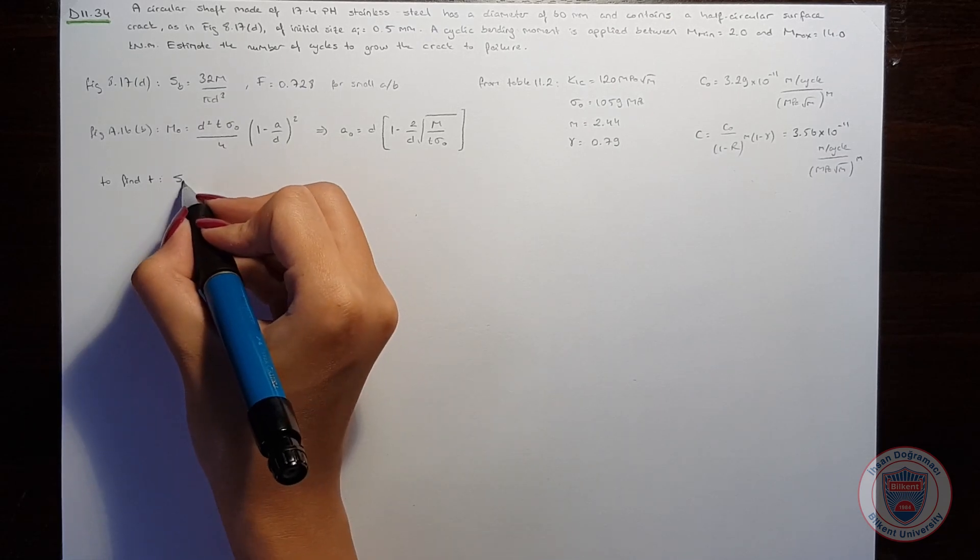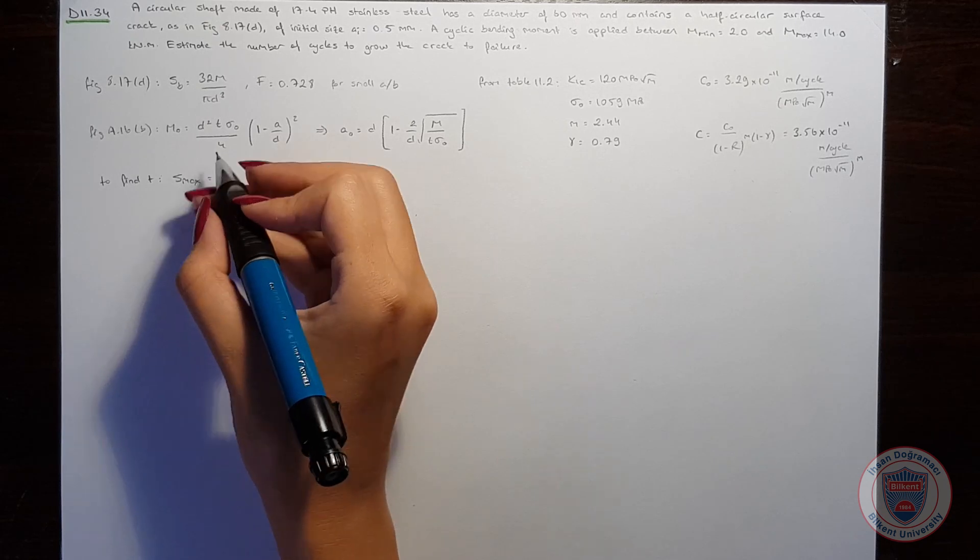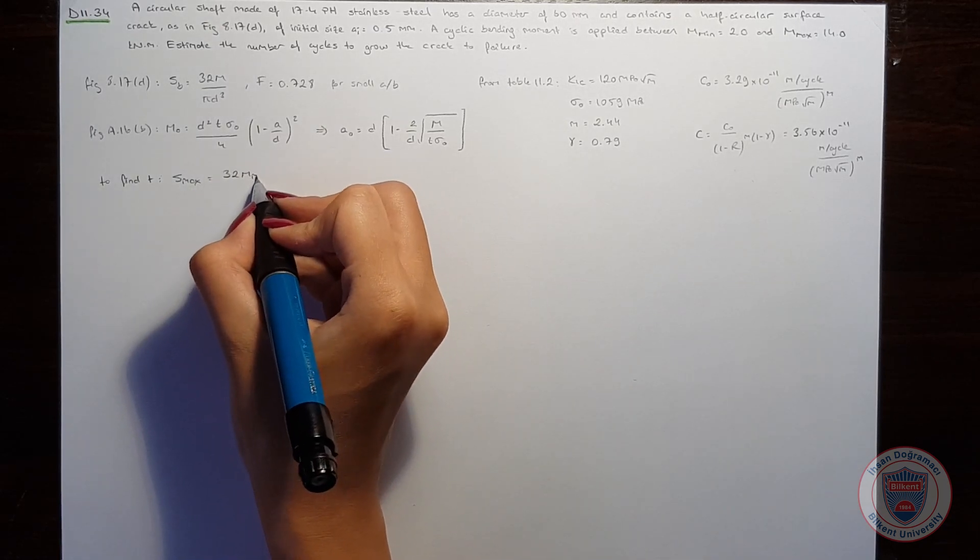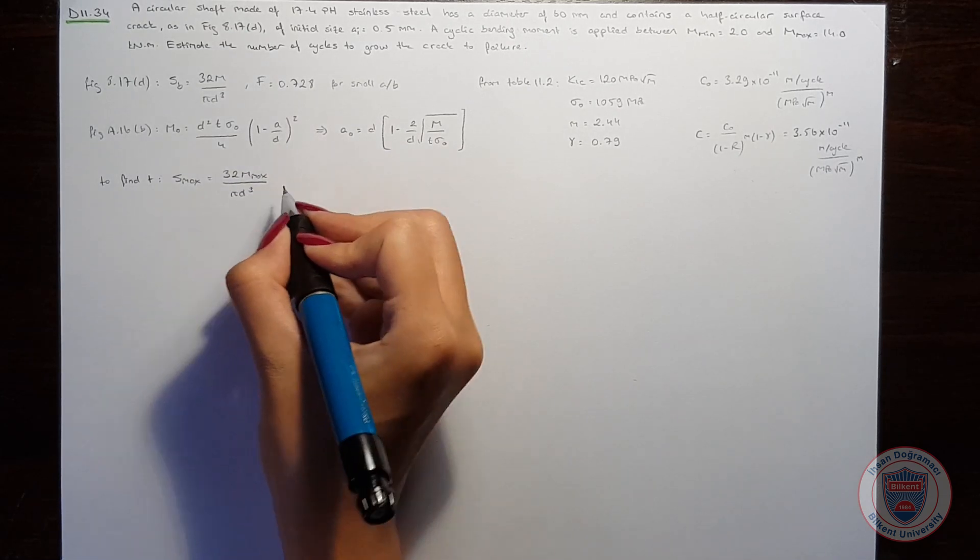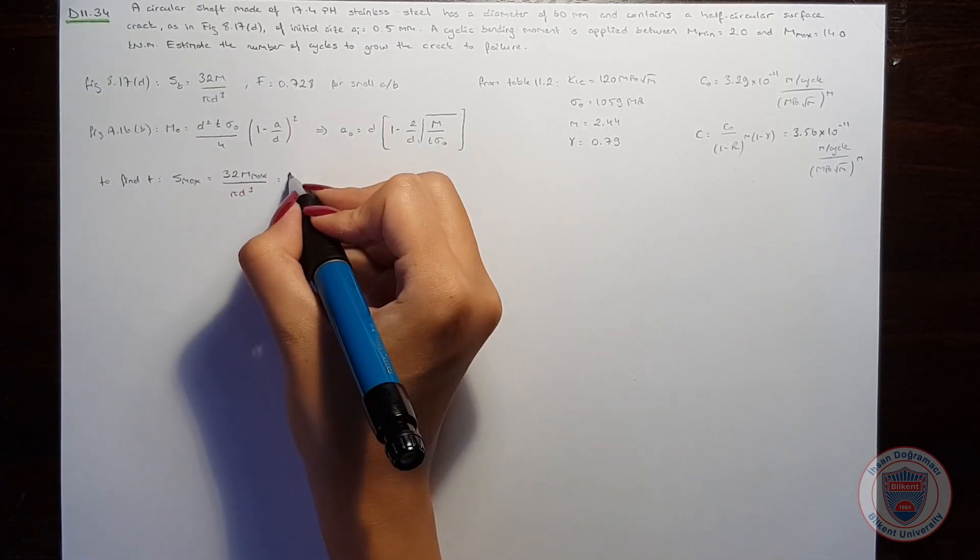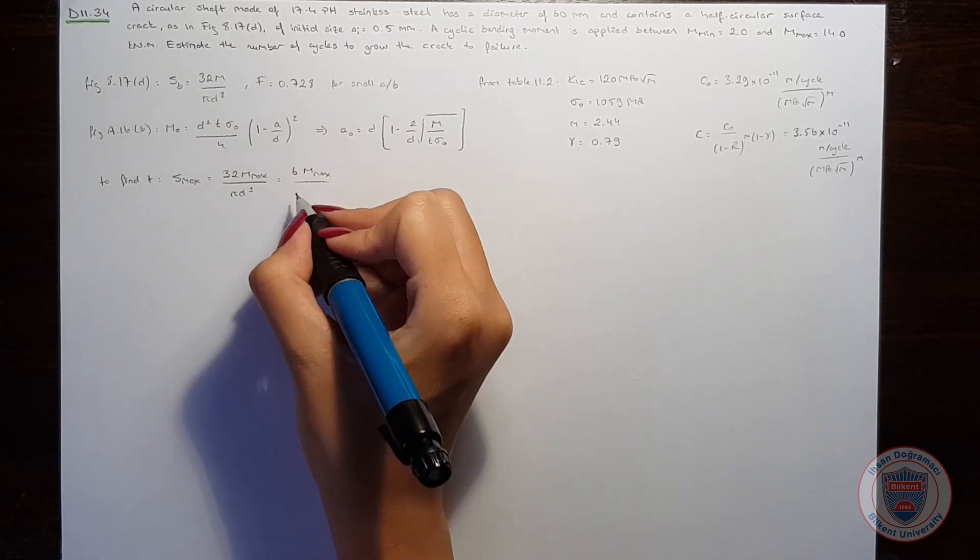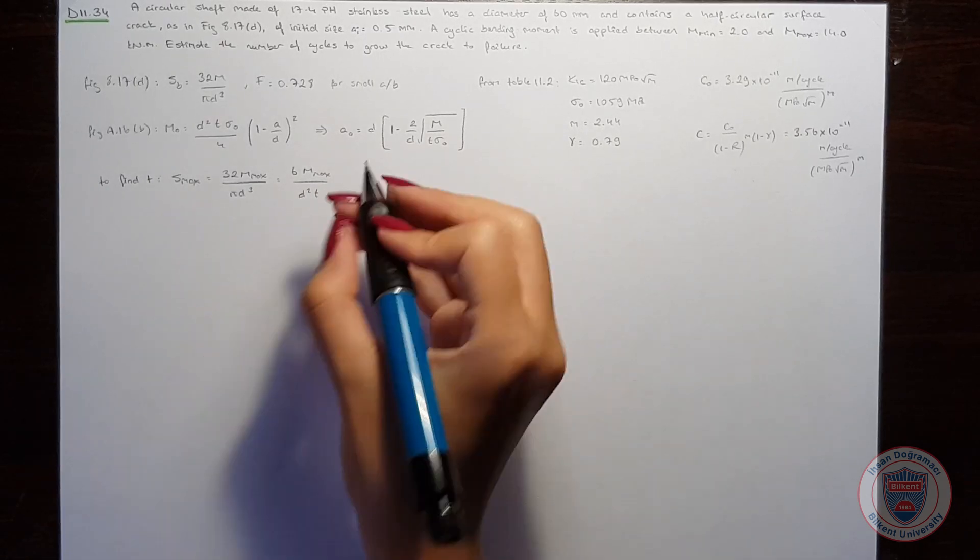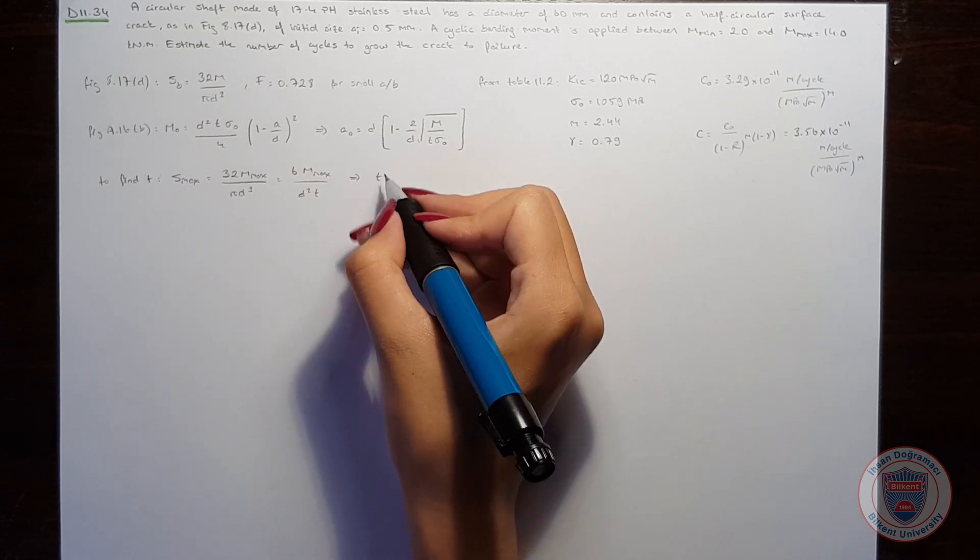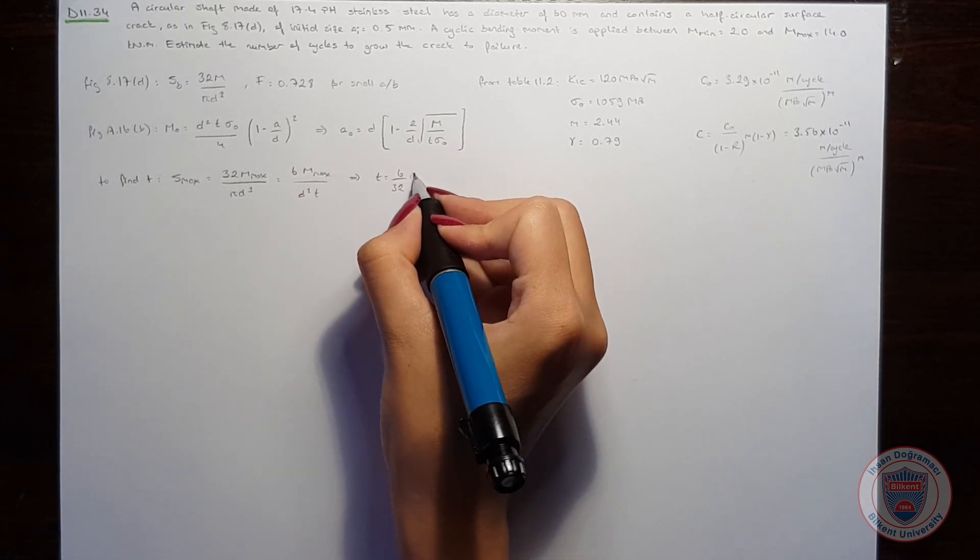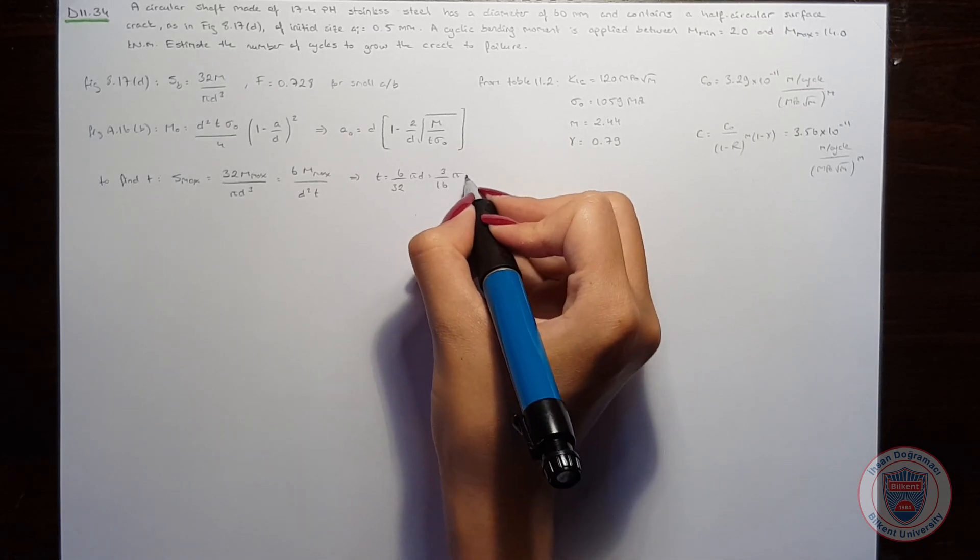We will use Smax. We know that Smax is equal to 32 times the maximum moment over πd³ and it is equal to 6 times again the maximum moment over d² times t. So we can see that t is 6 over 32 times πd, which is 3 over 16πd.